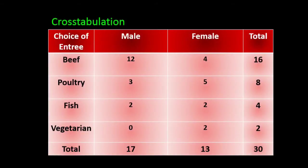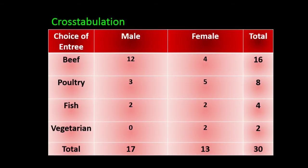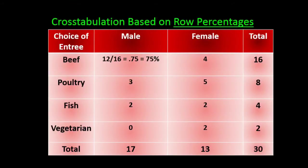Let's start over again with the original cross-tabulation filled with count data. The grand total is 30 with 17 males and 13 females. Suppose we want to know the percentage of beef entrees ordered by males. The number of males who ordered beef is 12, and the total number of beef entrees is 16. So the percentage of males who ordered a beef entree would be 12 out of 16: 12 divided by 16 is 0.75, or 75 percent. So 75 percent of the beef entrees were ordered by males.